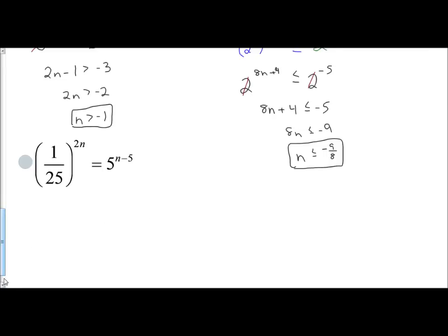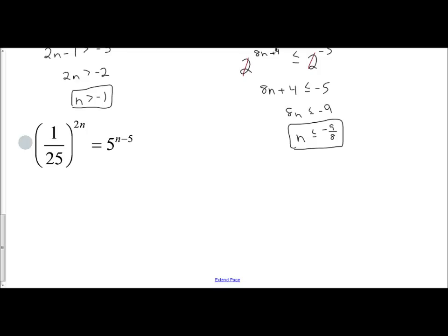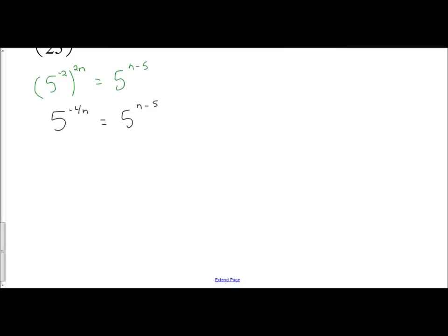Let's look at the last example. (1/25)^(2n) = 5^(n-5). Right off the bat, I should see that 1/25 is really 1/5^2, which means 5^(-2). So I have (5^(-2))^(2n) = 5^(n-5). I would apply my power rule. -2 and 2n is -4n. So I get 5^(-4n) = 5^(n-5). Since I have the same base, I can ignore them and just deal with the exponents. -4n = n - 5. Subtract n, you get -5n = -5, n equals 1 when you divide both sides by -5.